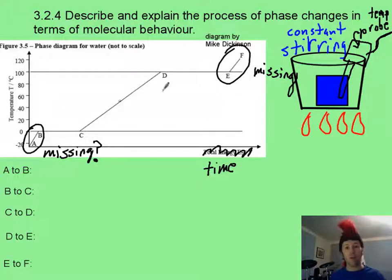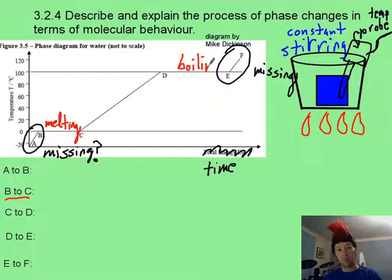Now phase changes are going to be marked by a constant temperature. So from B to C, this is going to be our melting phase. And from D to E, this is going to be our boiling phase. And now if you can also pause it, take a minute and write down some sort of statement about what's happening at all of these segments.